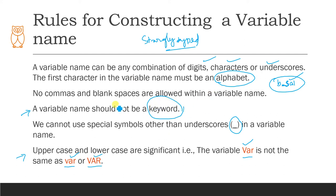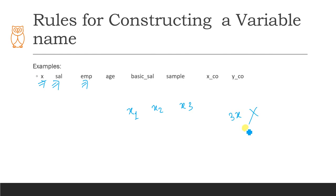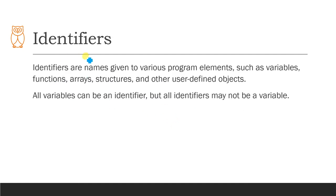Lowercase and uppercase letters are distinct in C, so you must follow all these rules when declaring a variable. Valid variable names include: x, sal, salary, employee_age, basic_salary, a_sample, x1, x2, x3. However, '3x' is invalid because a variable name cannot start with a number. You can start with a letter, but not with a digit.